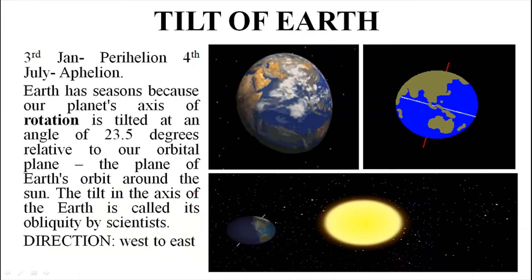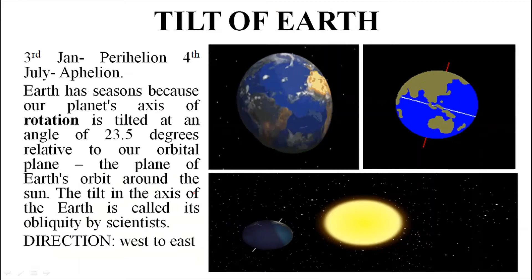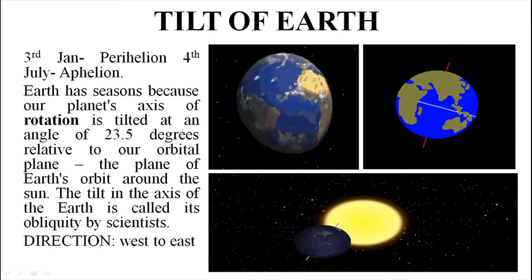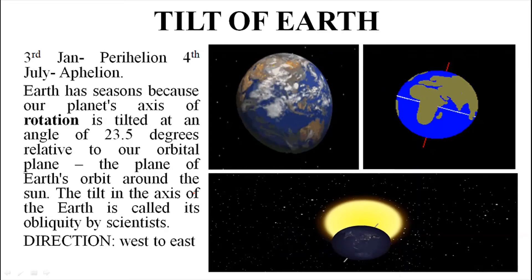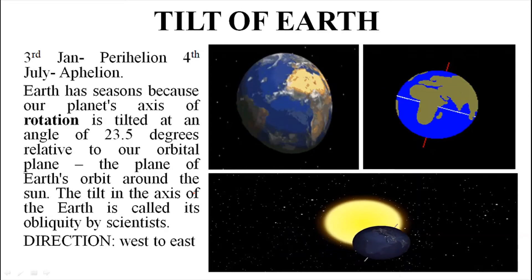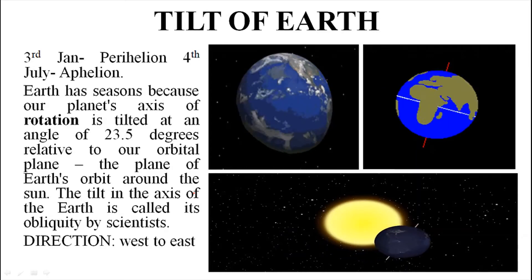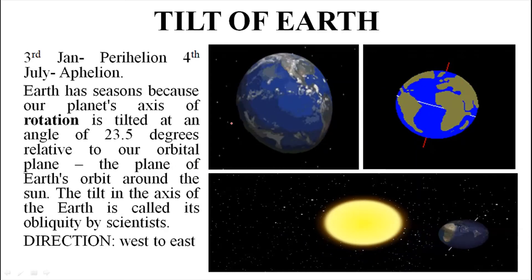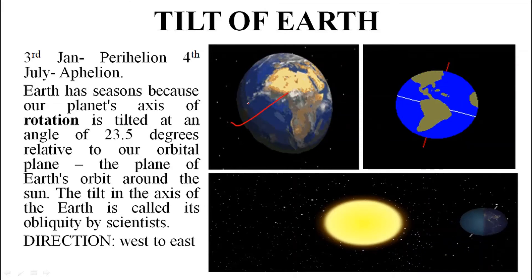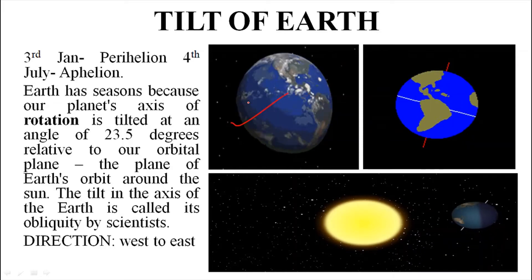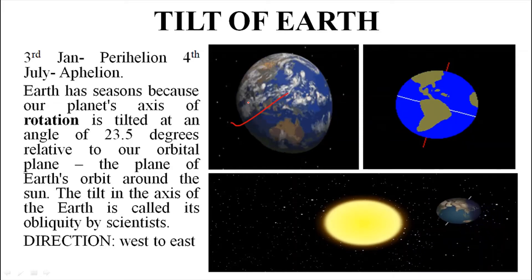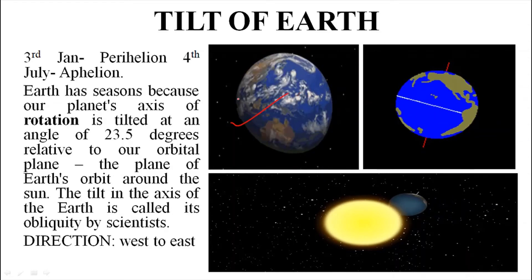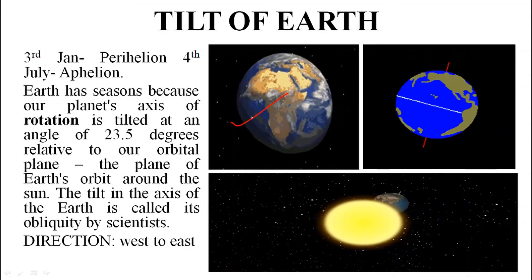The other movement of the Earth is on its own axis, which is called rotation or spinning. The movement of the Earth on its own axis is called rotation. To complete one rotation, Earth takes 24 hours, and that is called one Earth day.